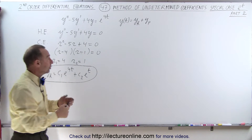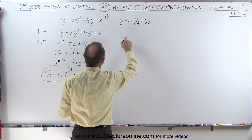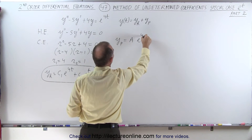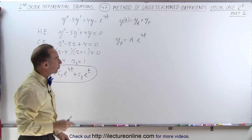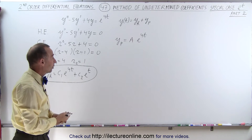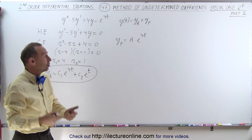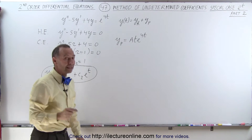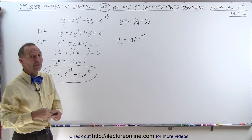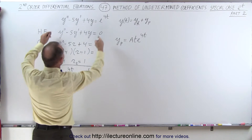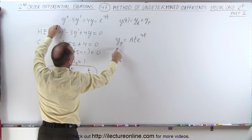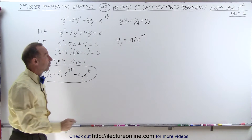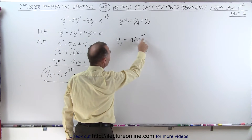Therefore the general format of the particular solution cannot be y_particular equal to A times e to the 4t. We have to do something else, because when we tried that we ended up with an inconsistent situation where we had zero equals e to the 4t. We can solve that by multiplying by t — that will now become the general form of the particular solution. We're going to take this and substitute y_p, y'_p, and y''_p into the equation to find the undetermined coefficient, with the general form t times e to the 4t instead of simply e to the 4t.